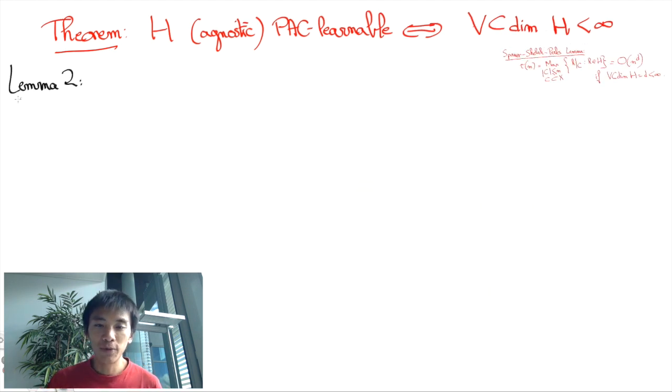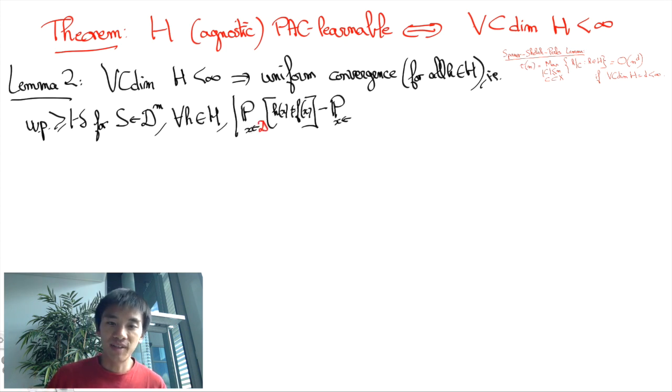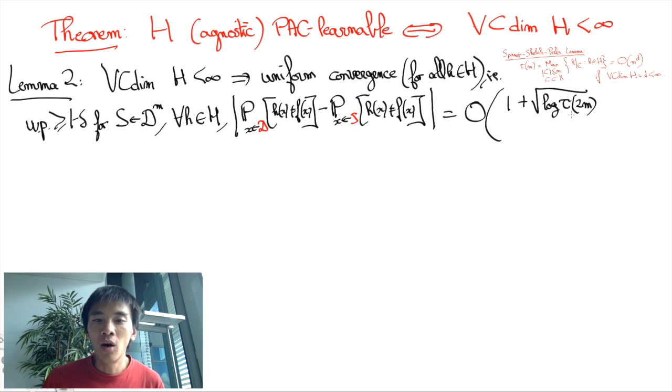Now, the second lemma we need is a proof of uniform convergence. More specifically, with high probability over sample sets of size M, the frequency of mispredictions of any hypothesis H on the sample set is not much different from the probability of mispredictions of H according to the probability distribution D. And in fact, with high probability, this deviation caused by the sample set can be nicely upper bounded by the square root of the logarithm of the number of restrictions of the hypothesis to subsets of size 2M, that's tau of 2M, divided by the square root of M, along with some other terms that are less important.